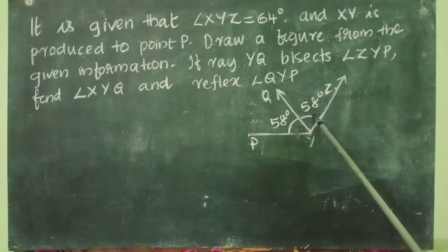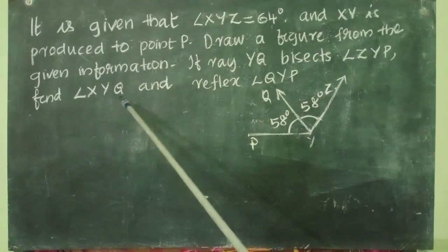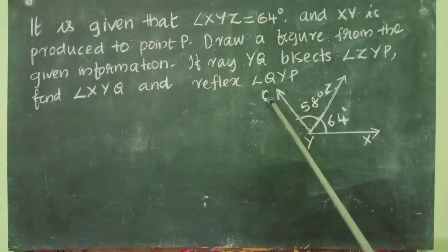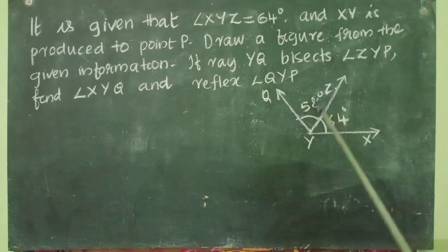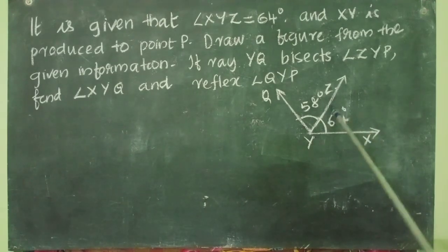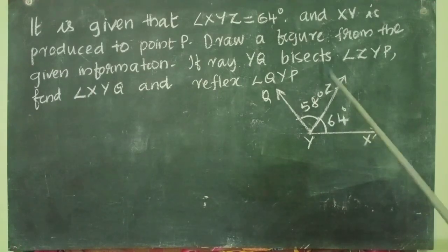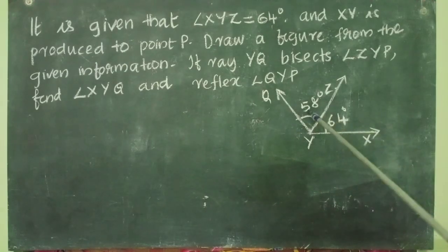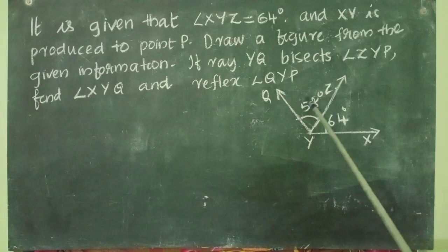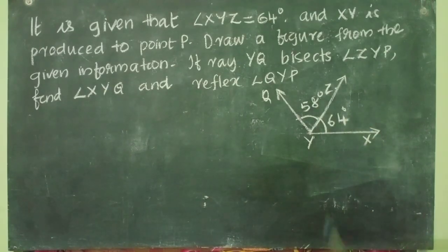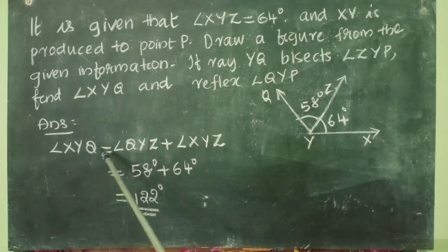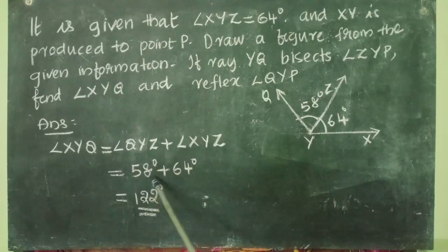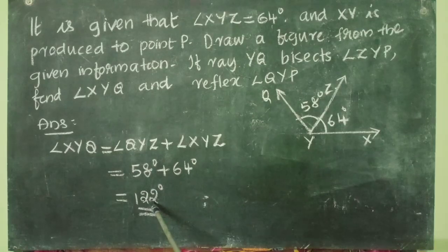Now the question is to find angle XYQ. In the figure, angle XYQ is the combination of angle QYZ and angle ZYX. We know angle ZYX, or XYZ, equals 64 degrees as given. And angle QYZ we found is 58 degrees. So angle XYQ equals 58 degrees plus 64 degrees. Therefore angle XYQ equals angle QYZ plus angle XYZ equals 58 degrees plus 64 degrees equals 122 degrees.